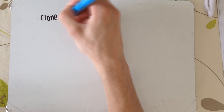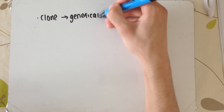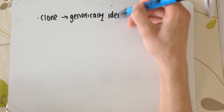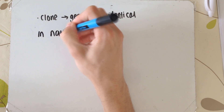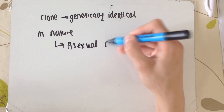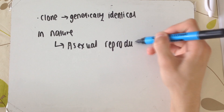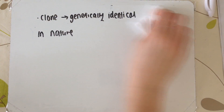So a clone is something that is genetically identical. In non-science contexts, cloning could mean anything that's the same, but in Biology A2 you have to say genetically identical. In nature, clones asexually reproduce.